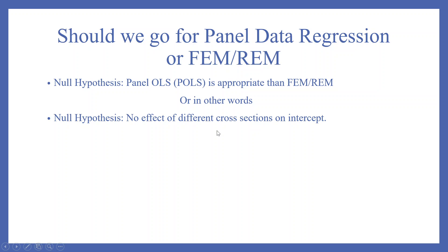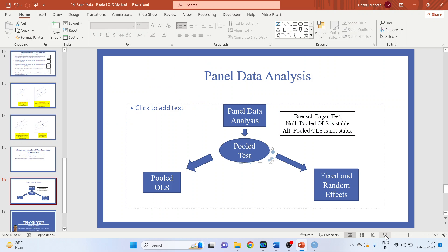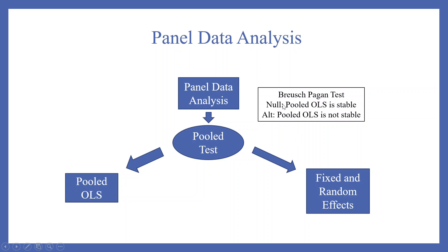We decide whether to go for pooled OLS, fixed effects, or random effects using a test. The null hypothesis is that pooled OLS is appropriate rather than fixed effects or random effects — in other words, no effect of different cross-sections on intercept. For this we run the Breusch-Pagan test. When we have panel data, we first run the pooled test to decide: should we go for pooled OLS or fixed/random effects? Null: pooled OLS is stable. Alternative: pooled OLS is not stable.